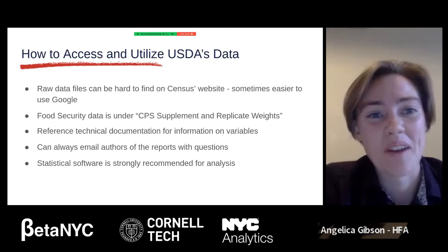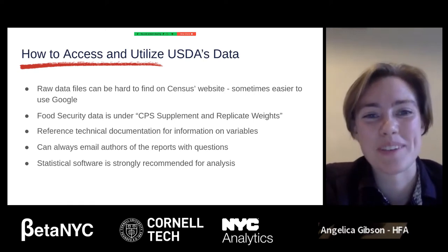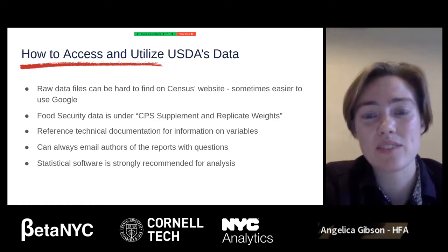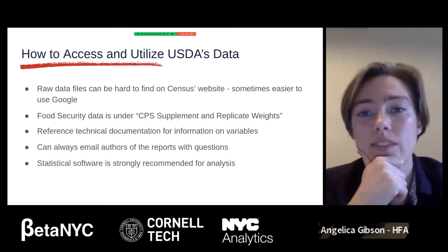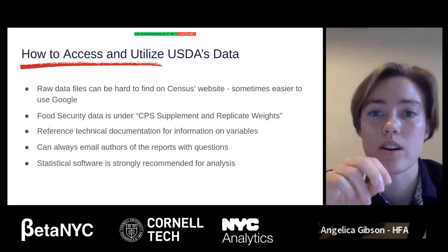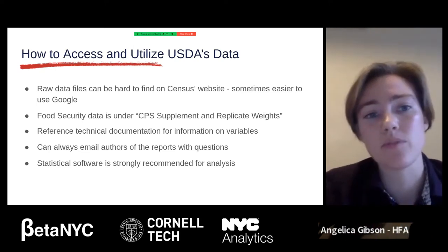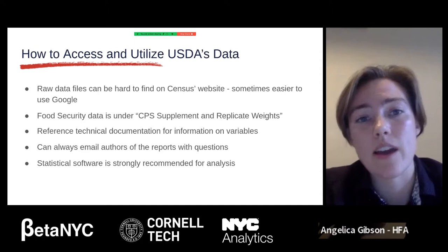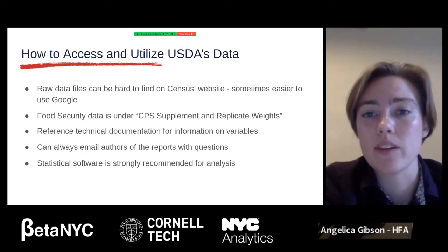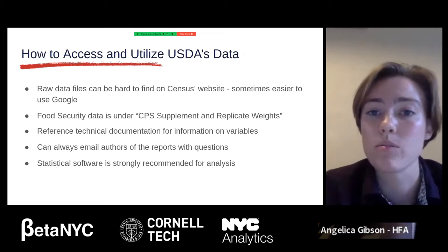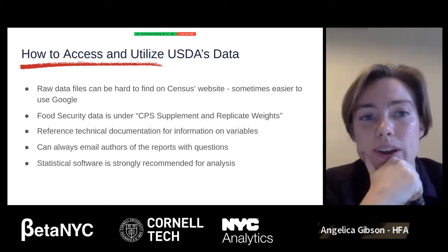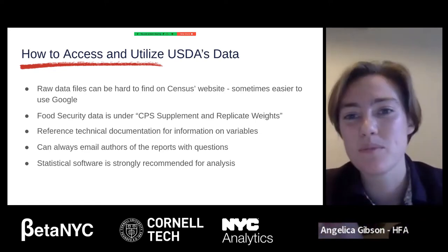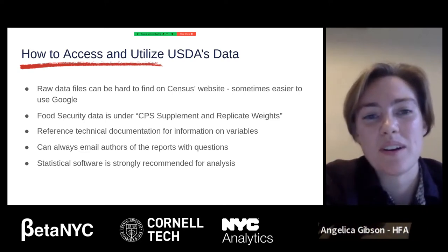The first challenge is finding the raw data files — those are extremely hard to find on the census's website. Sometimes it's easier to just Google. The more specific data sets are often tied to larger survey efforts; for example, the food security data is part of the Current Population Survey. You can find that type of information by looking at the methodology section of whatever federal report you're looking at. Then to find the raw data, type something like 'current population survey food security raw data' into Google.